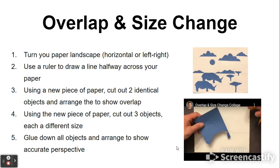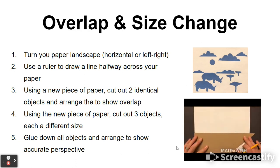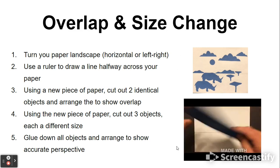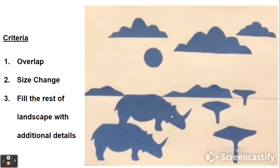Because what you did last time was use different collage elements to create several different objects that show examples of overlap as well as size change using a horizon line. So my example looks like this. I've got overlap here where this is in front of this. I have size change where these trees get smaller as they go back in the distance. And I filled the rest of my page with other additional details.